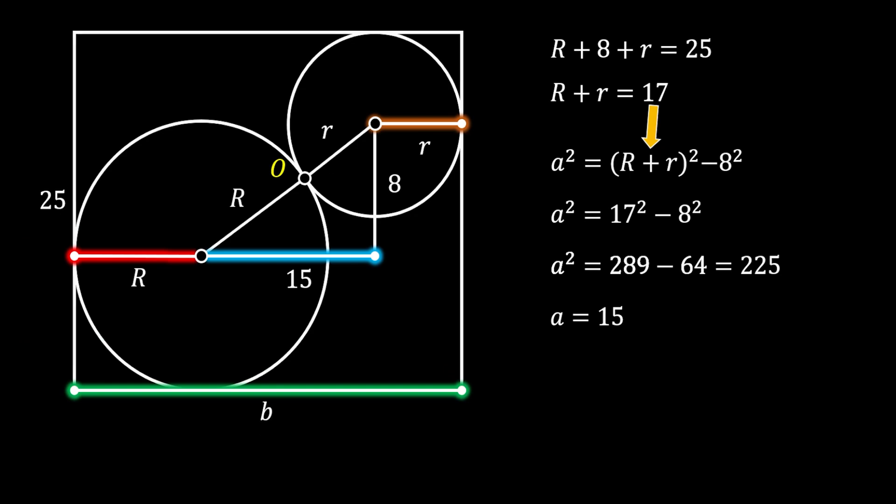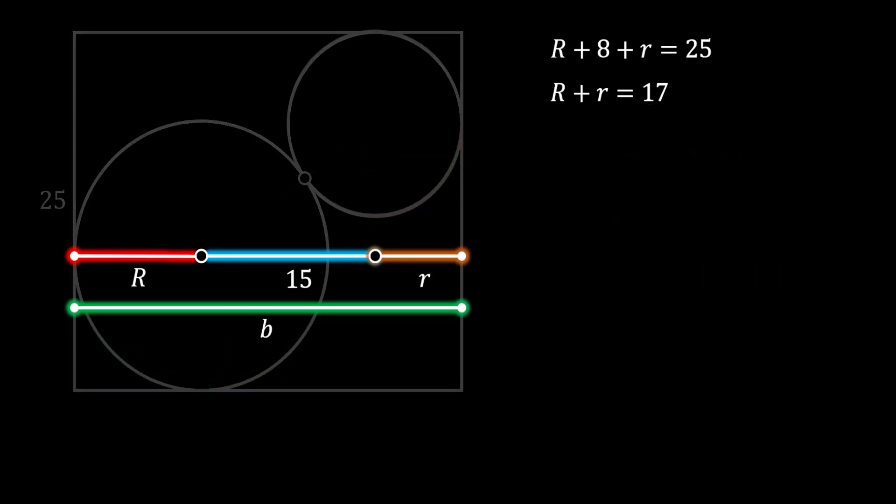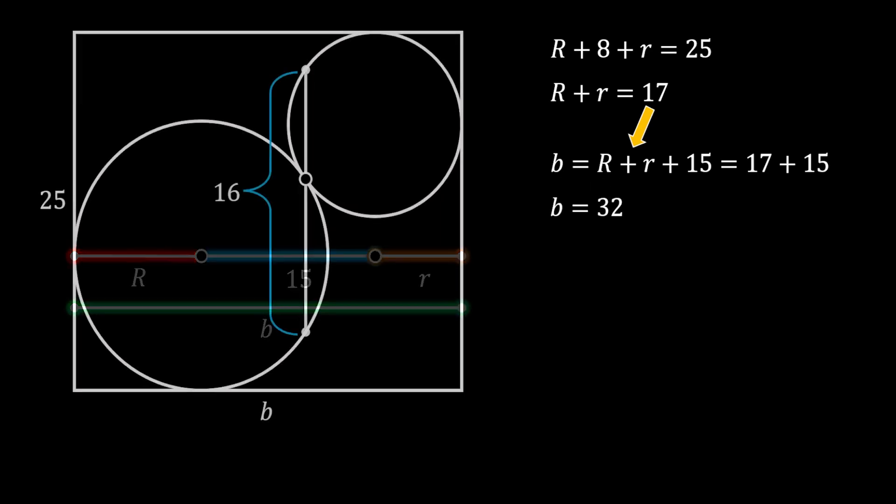Now, if we again clear our image and rearrange those lines, you can see that the base of our rectangle is equal to the sum of radii of our two circles and the line with the length of 15. Now, again, we will substitute the value for the sum of both radii and get that B is equal to 17 plus 15, which means that the base of our rectangle has the length of 32.